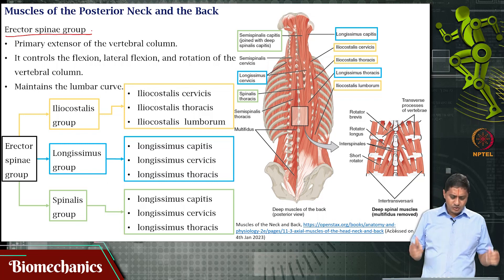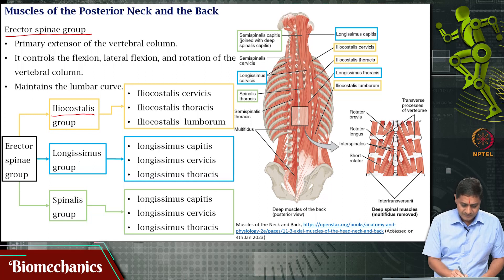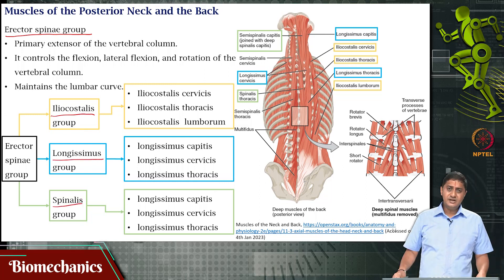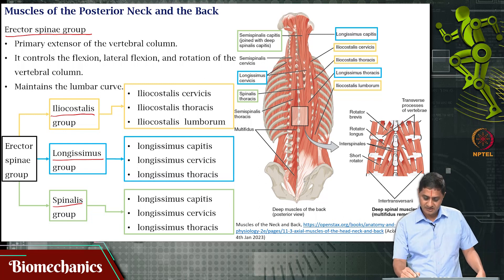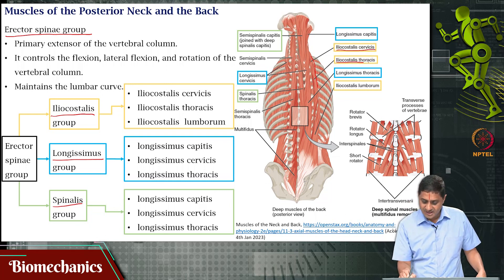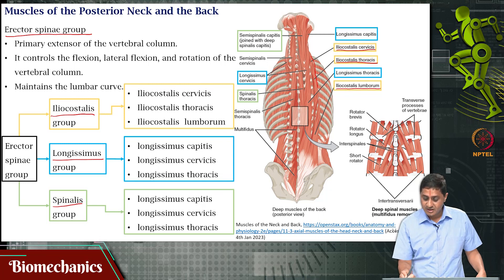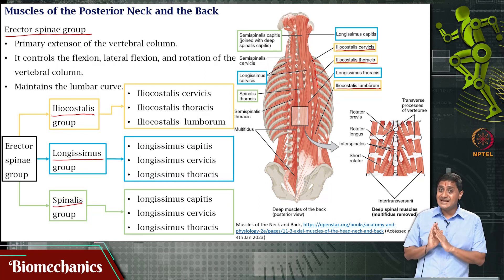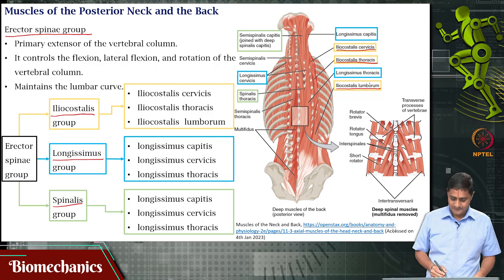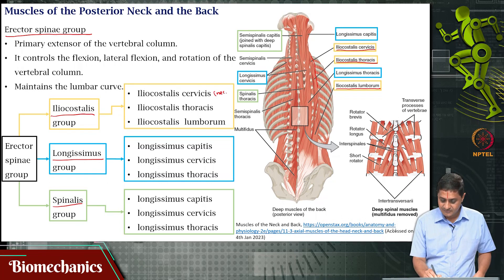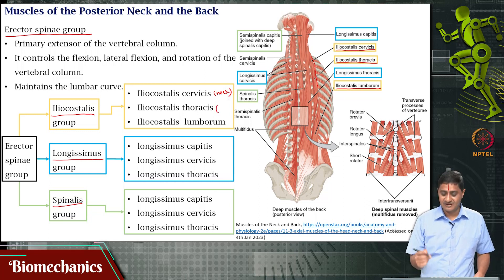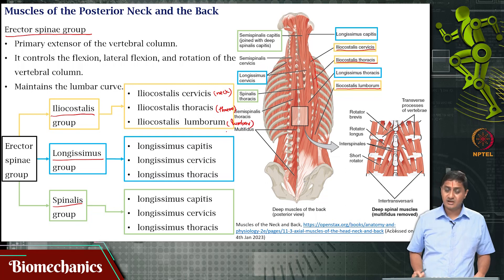The erector spinae can be divided into three broad groups. The iliocostalis group is placed most laterally. At the level of the neck it is called iliocostalis cervicis, at the level of the thorax it is called iliocostalis thoracis, and at the level of the lumbar vertebra it is called iliocostalis lumborum.